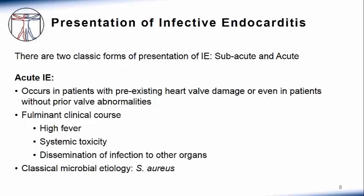On the other hand, acute infective endocarditis has a dramatic presentation, where patients present with high fever and have rapid onset of systemic toxicity such as low blood pressure, organ failure, and dissemination of infection to organs other than the heart, such as the lungs, liver, spleen, and peripheral skin. Staph aureus typically presents with acute endocarditis, and staph aureus endocarditis can occur on previously damaged valves as well as in the absence of any pre-existing heart valve abnormalities.